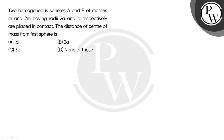Let's read the question: Two homogeneous spheres A and B of masses M and 2M having radii 2A and A respectively are placed in contact. The distance of the center of mass from the first sphere is to be found. So we have two spheres A and B. Mass of A is given as M and mass of B is given as 2M. The radius of A is 2A and the radius of B is A.